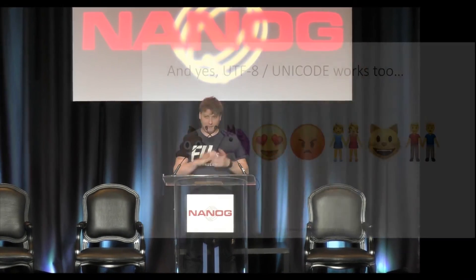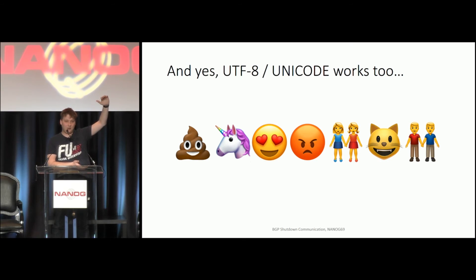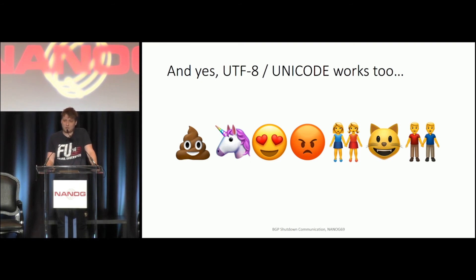The shutdown communication is 128 bytes maximum. This is to prevent visual spoofing — it would be annoying if half your syslog turned out to be one shutdown communication message from a malicious actor. By keeping the message short, it will be easier to understand for operations.